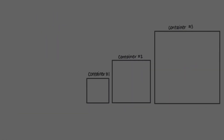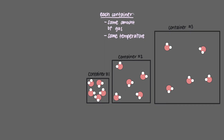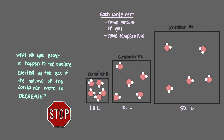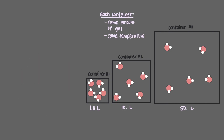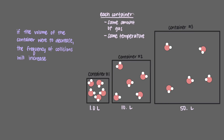But what if we were to decrease the volume of the container while keeping the amount of gas and the temperature the same? This container will have a volume of 1 liter, this one 10 liters, and this one 50 liters. If the volume of the container were to decrease, gaseous molecules will have less time to travel between collisions. This means that the frequency of collisions will increase, and the pressure exerted by the gas will also increase. So a decrease in volume causes an increase in pressure. In other words, volume and pressure are inversely related, assuming temperature and the number of gaseous molecules stay the same.